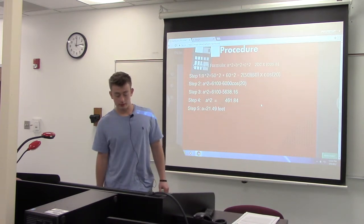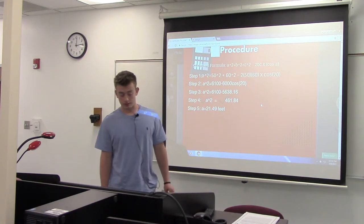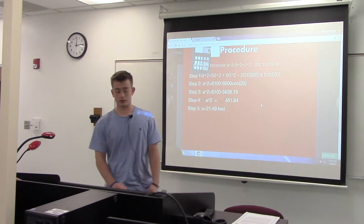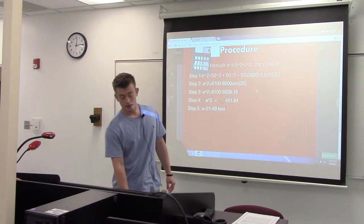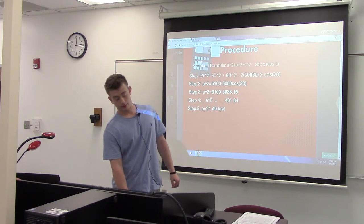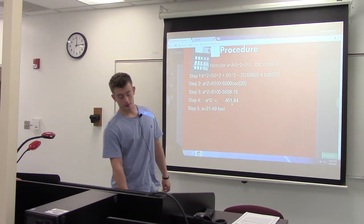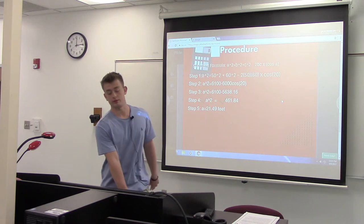So step one is a squared equals 50 squared plus 60 squared minus 2 times 50 times 60 times the cosine of 20. And once you get to step four, all you do is square root both sides, and you get a equals 21.49 feet.